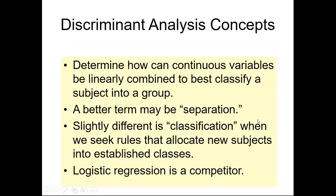So how can a continuous variable be linearly combined to best classify a subject into a group? This technique uses only quantitative data — measurement data such as heights, weights, head circumference, cholesterol levels, blood pressure levels, and so on. You may wonder: I said it uses quantitative data but we used it to discriminate between Biden's and Trump's speeches. Yes — those are string variables that are converted into word counts, which are again continuous quantitative variables. That is how we used it.